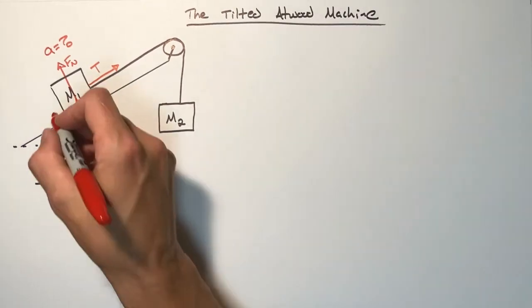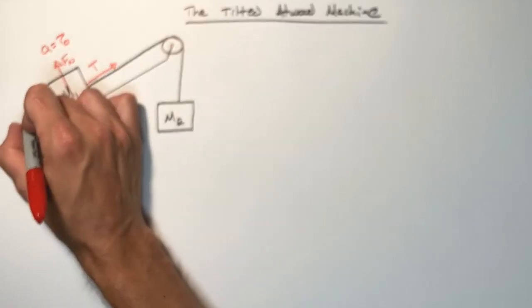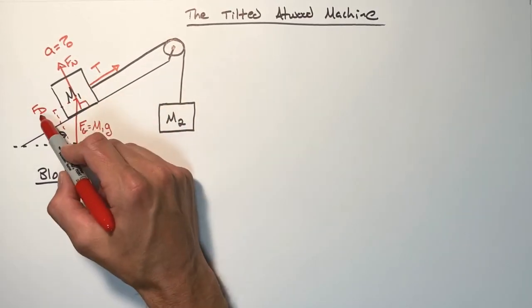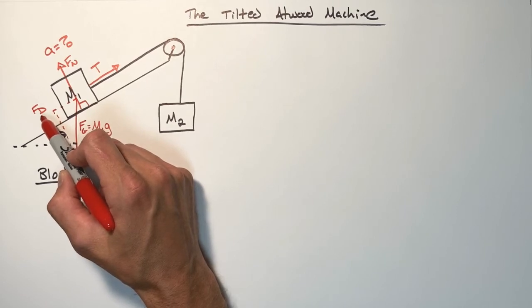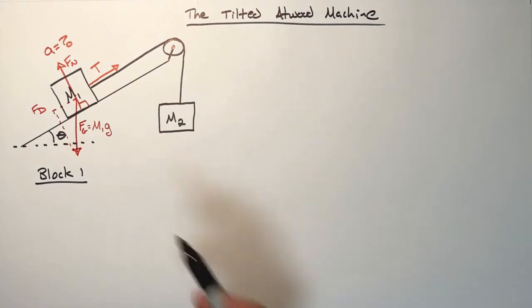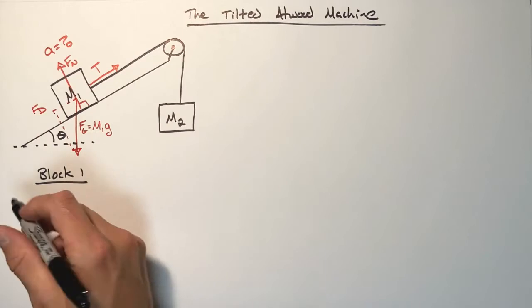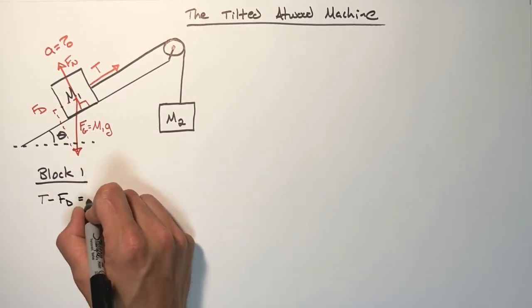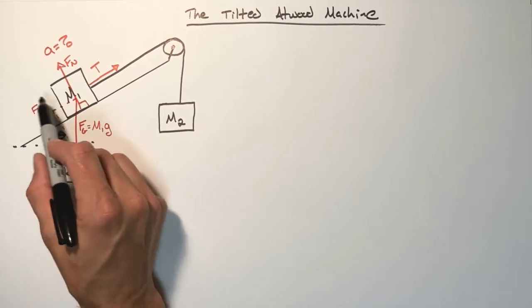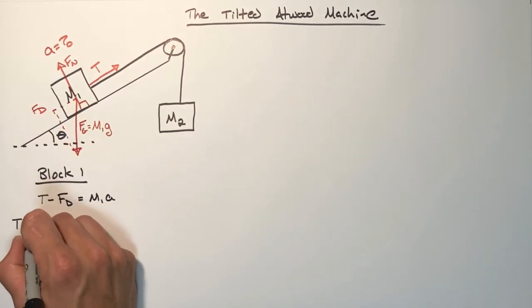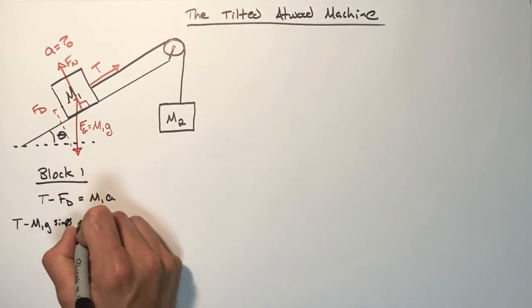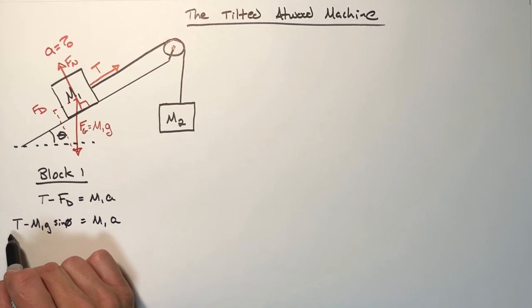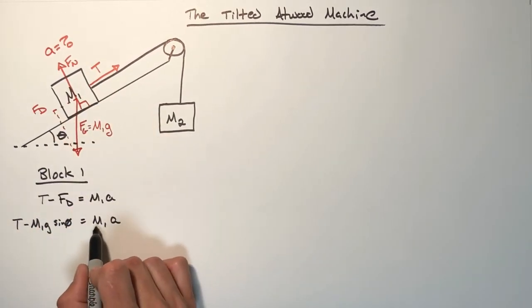So once we've figured out how large the force down the hill is, now we can look at the forces within the plane of the hill. We have tension up the hill and we have the component of gravity parallel to the hill acting downward. We're calling it the force down. Applying these forces to Newton's second law, we get T minus FD is equal to M1A. And if we expand this term out, we have T minus M1G sine theta equals M1A. This equation is Newton's second law applied to this block. Here we have the sum of all forces, mass, and acceleration.